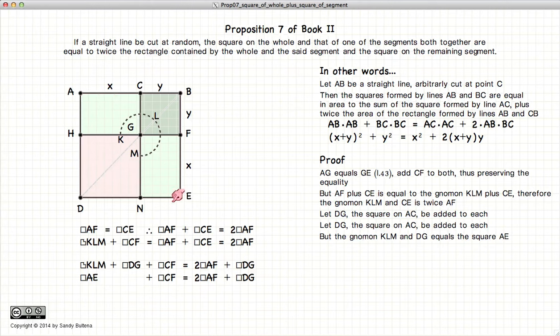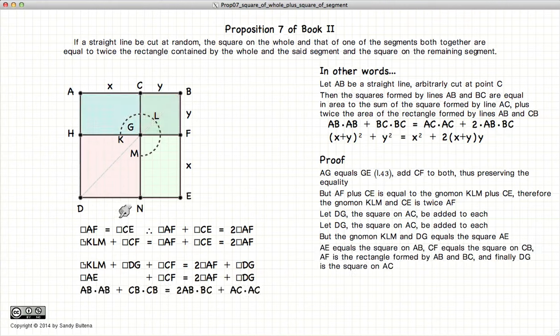Well what's AE? AE is AB squared. CF is CB squared. AF is AB times CB. And DG is AC squared. So we have shown that AB squared plus CB squared is equal to twice AB times CB plus AC squared.